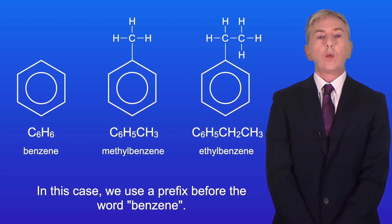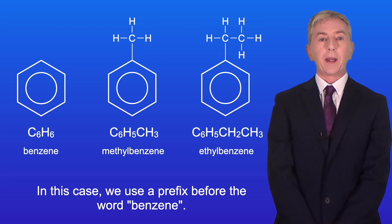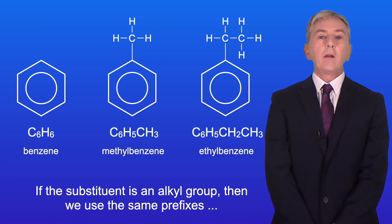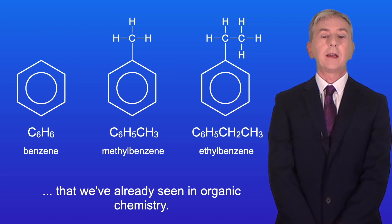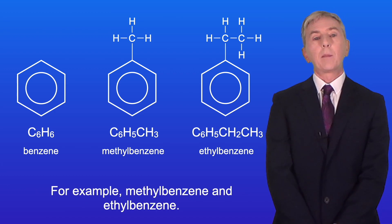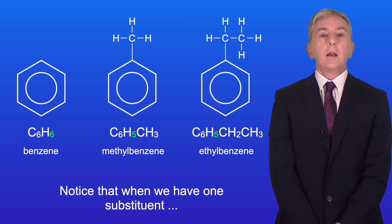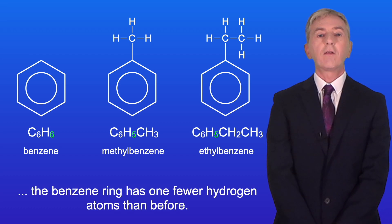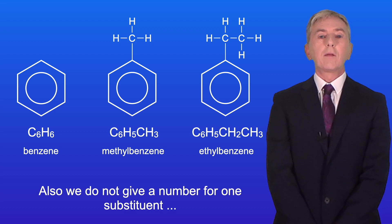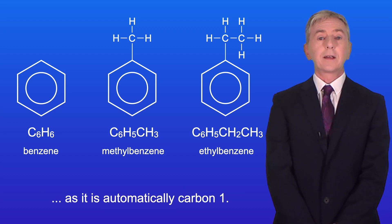In this case we use a prefix before the word benzene. If the substituent is an alkyl group then we use the same prefixes that we've already seen in organic chemistry, for example methylbenzene and ethylbenzene. Notice that when we have one substituent the benzene ring has one fewer hydrogen atom than before. Also we do not give a number for one substituent as it's automatically carbon one.